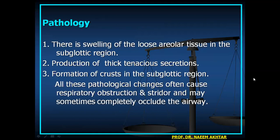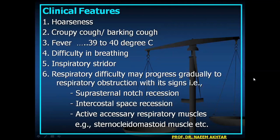Pathology: there is swelling of the loose subglottic tissue, production of thick secretions, and formation of crusts in the subglottic region. These pathological changes often cause respiratory obstruction and stridor, and may completely occlude the airway. Clinical features include hoarseness, croupy or barking cough, fever usually 39 to 40 degrees centigrade, difficulty breathing, and inspiratory stridor. Respiratory difficulty may progress gradually to obstruction with signs including suprasternal recession and intercostal space recession.